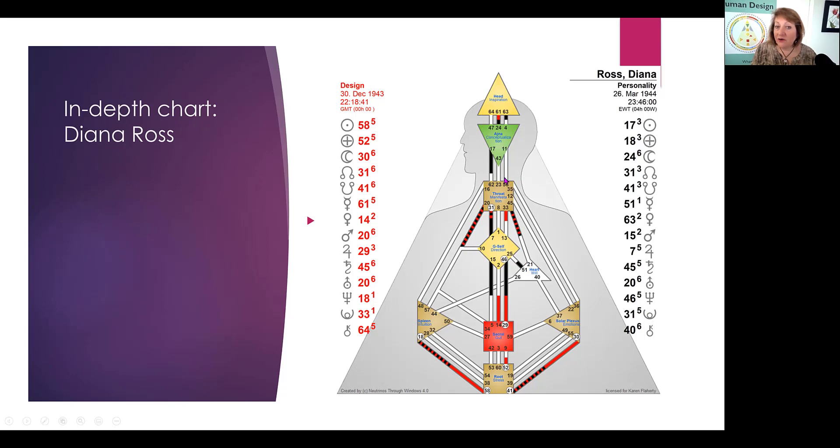So while she is a manifesting generator, she doesn't have the throat connected to the head or the Ajna. So, interesting, I would love to read more about it or find out how she got the songs, got the ideas, and how they played out. Because with this kind of configuration with no connection to the throat, usually people who are generators or manifesting generators are asked questions and answer the questions because they don't have any idea how much information is up there. So really, the more questions she's asked or the more requests that are made of her, perhaps, the better she would respond.